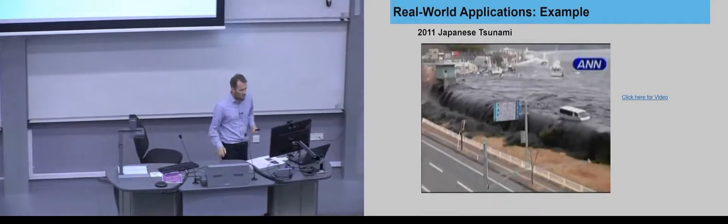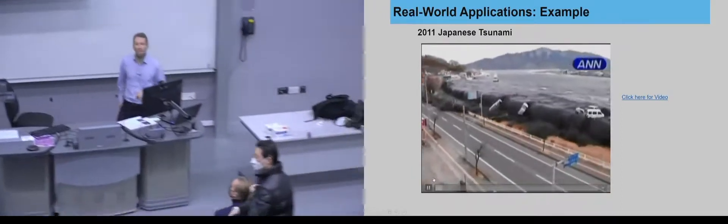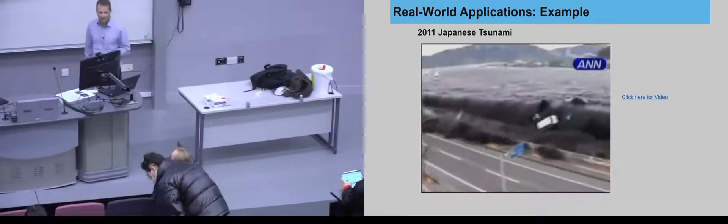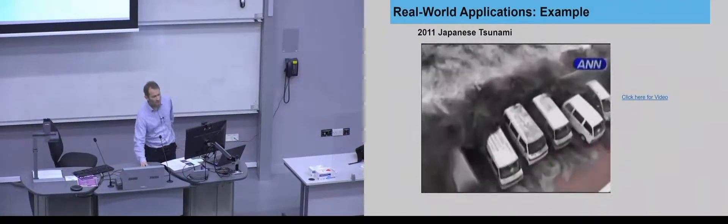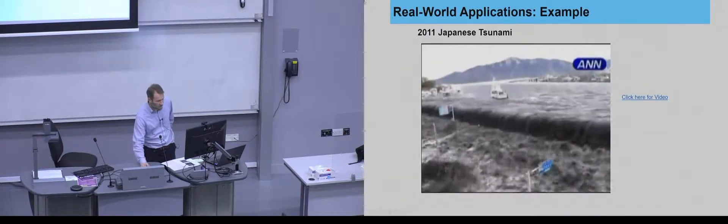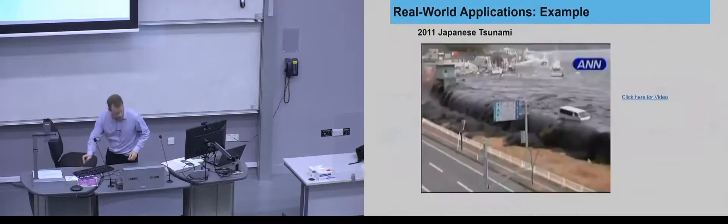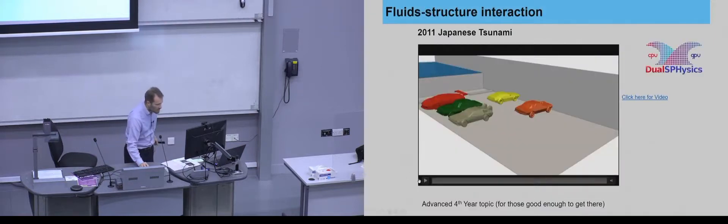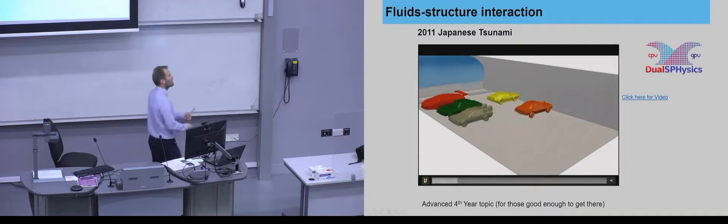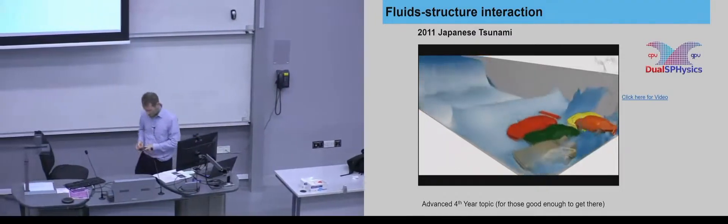This is an example of the kind of thing that I do. This is from the tsunami in 2011, and you can see an example of buoyancy as the water comes over and moves the vehicles around like toys — a very tragic event. We can do that sort of thing very easily with fluid mechanics. This is one of our simulations where we are able to simulate these vehicles.